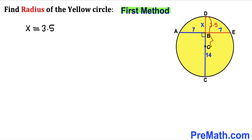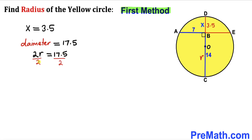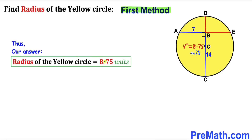Therefore the whole diameter CD is 3.5 plus 14, which equals 17.5 units. Representing the radius as r, the diameter is 2r equal to 17.5. Dividing both sides by 2, our radius r is 8.75 units. The radius of this yellow circle turns out to be 8.75 units using Method 1.